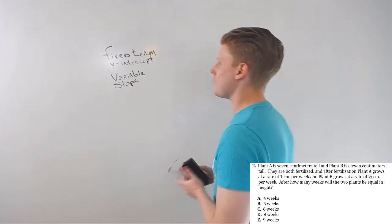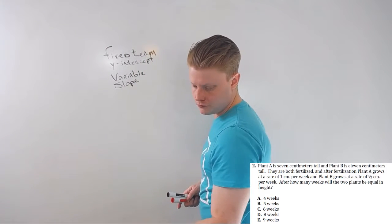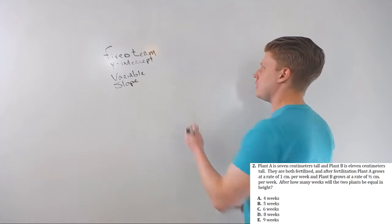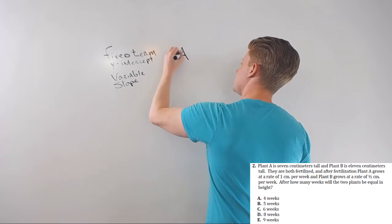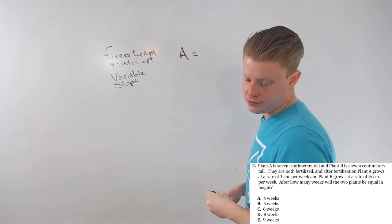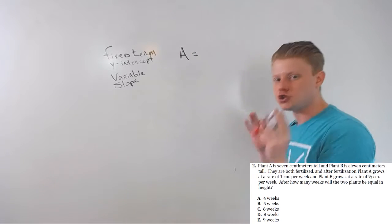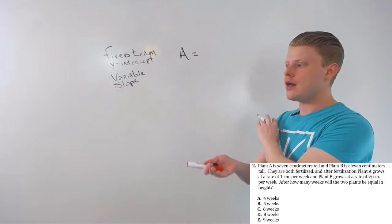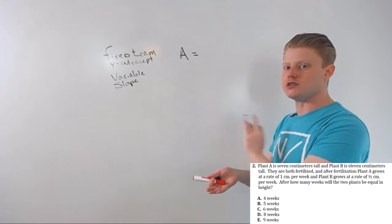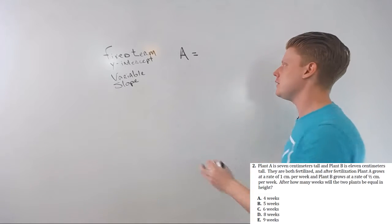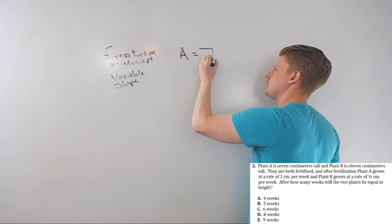So let's take a look at it. Plant A - A equals, A is seven centimeters tall. So that's its current size, it's seven centimeters tall, nothing changes, it's not a rate. So that's just going to stand alone, that's a seven.